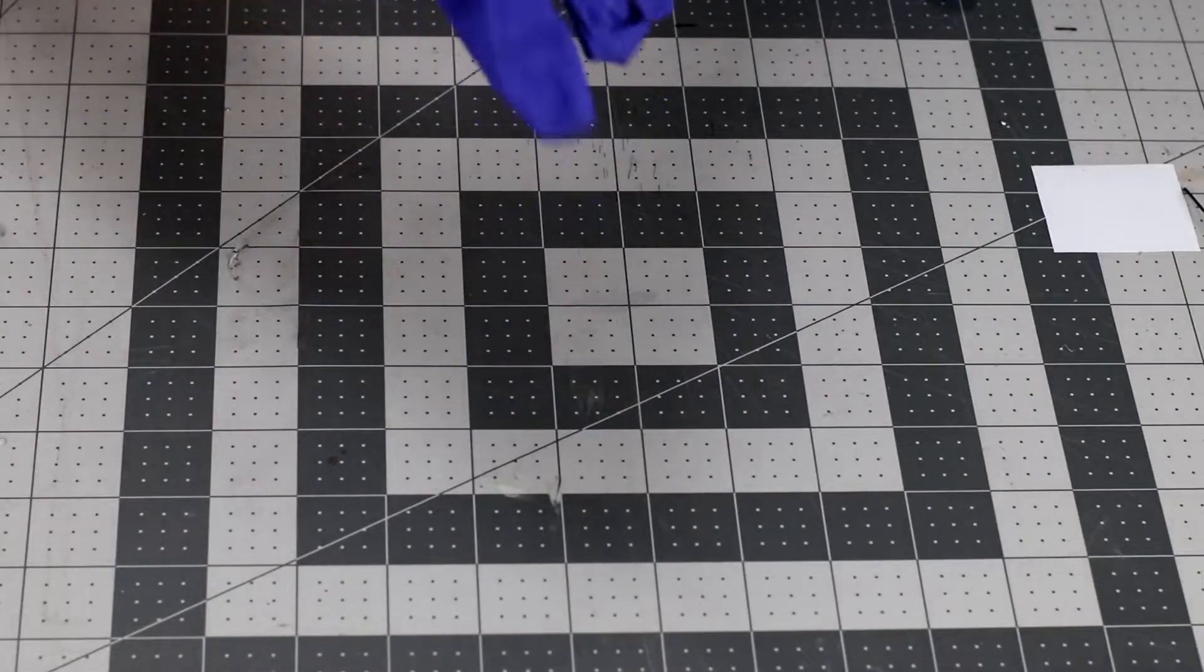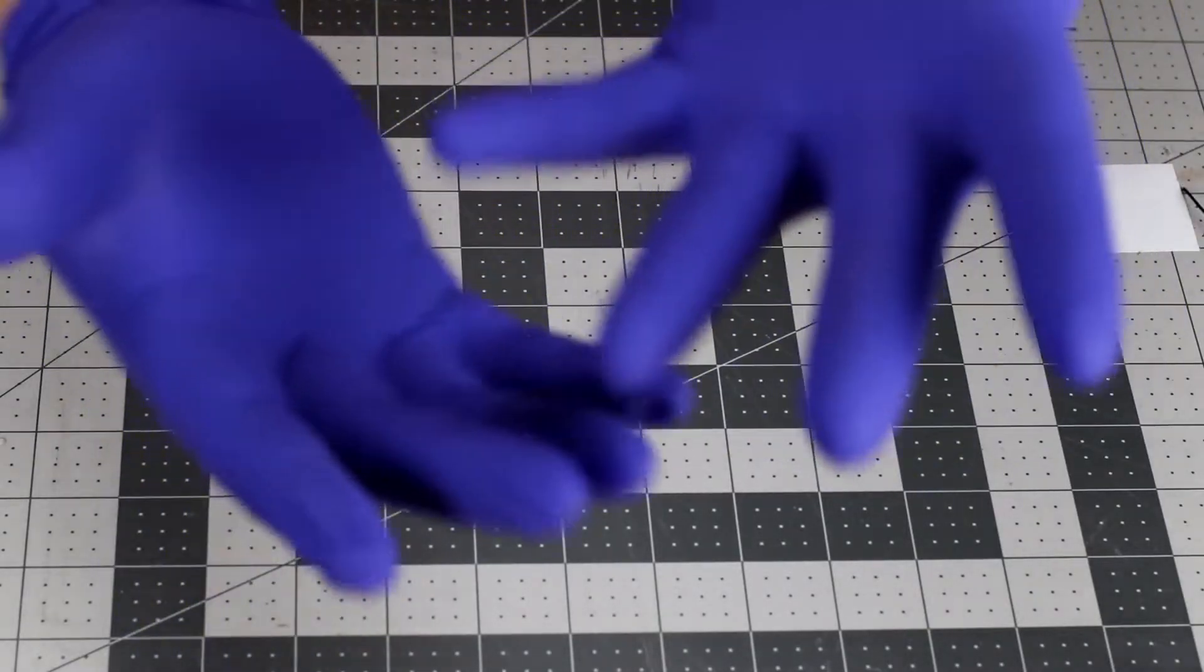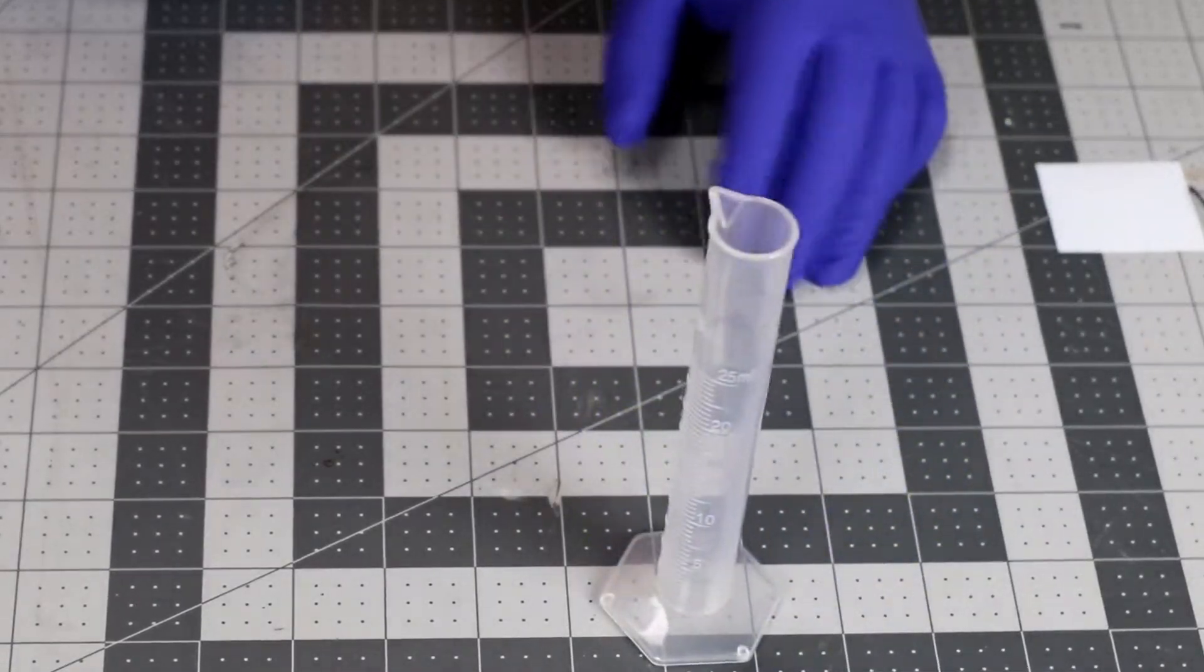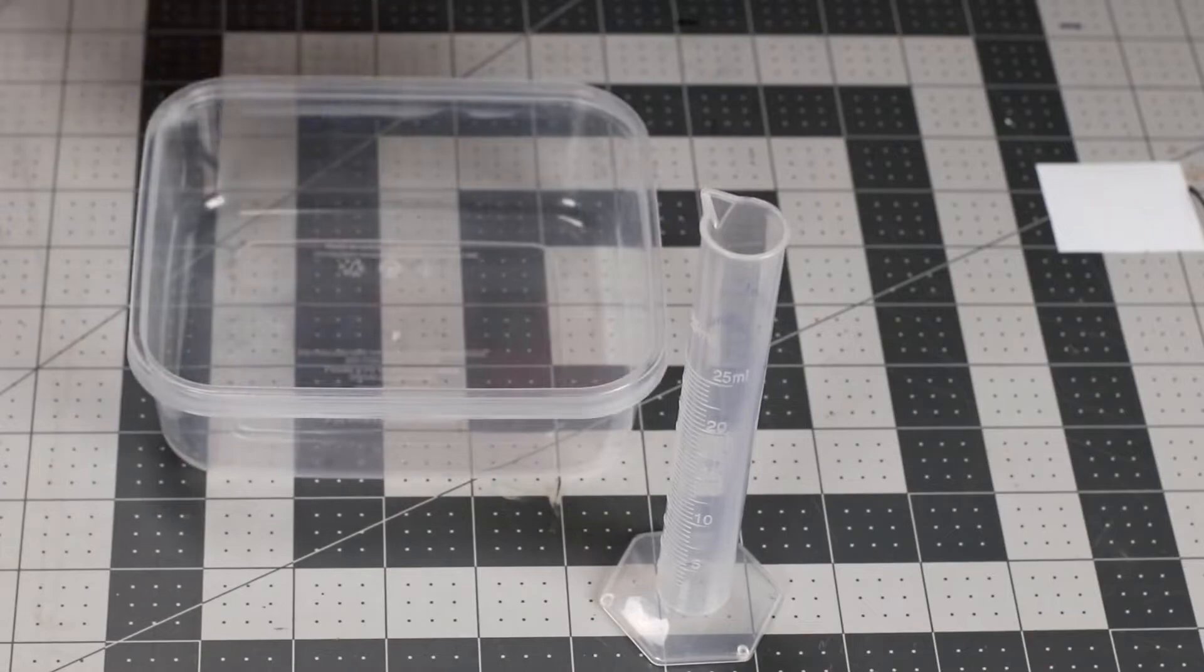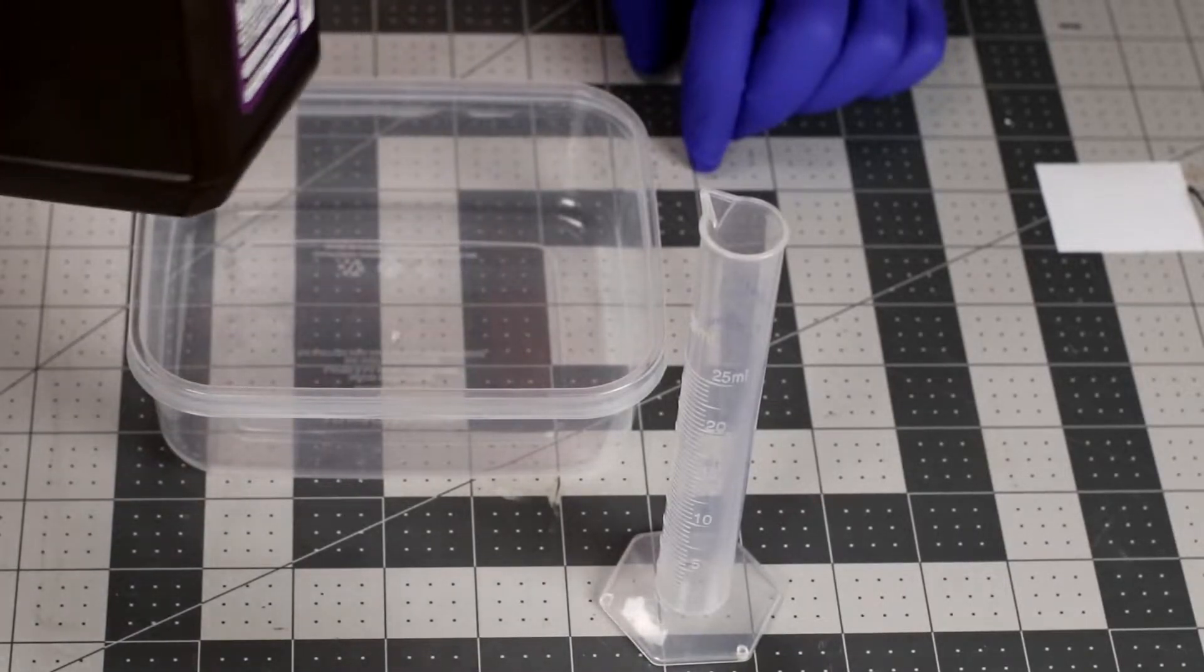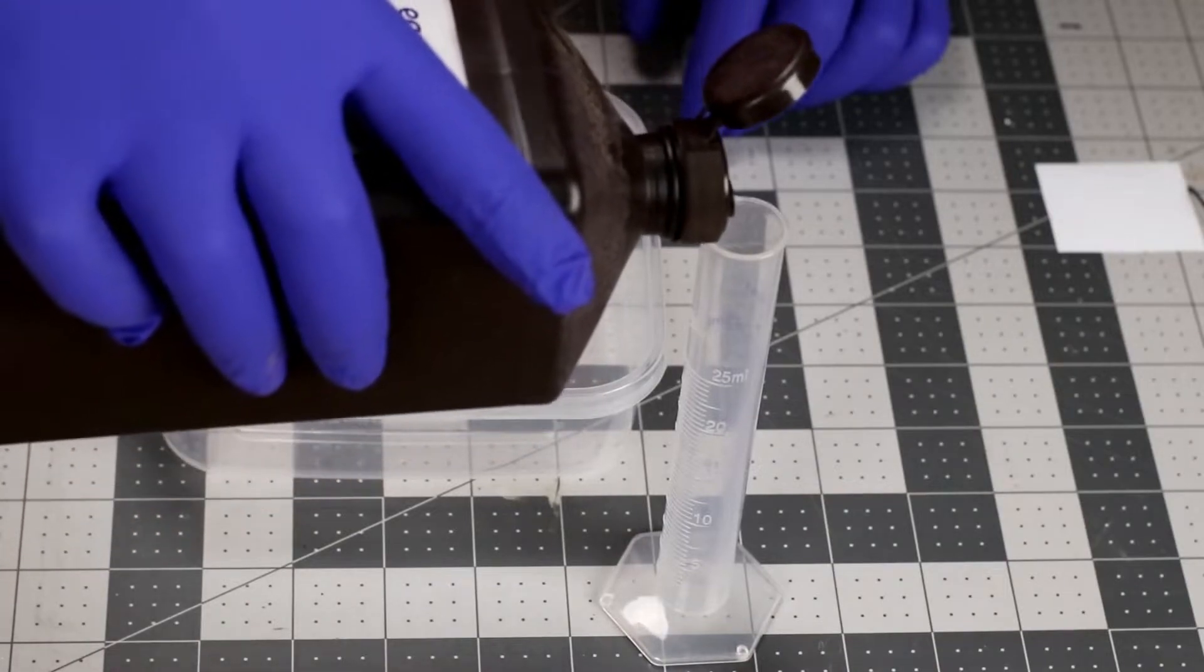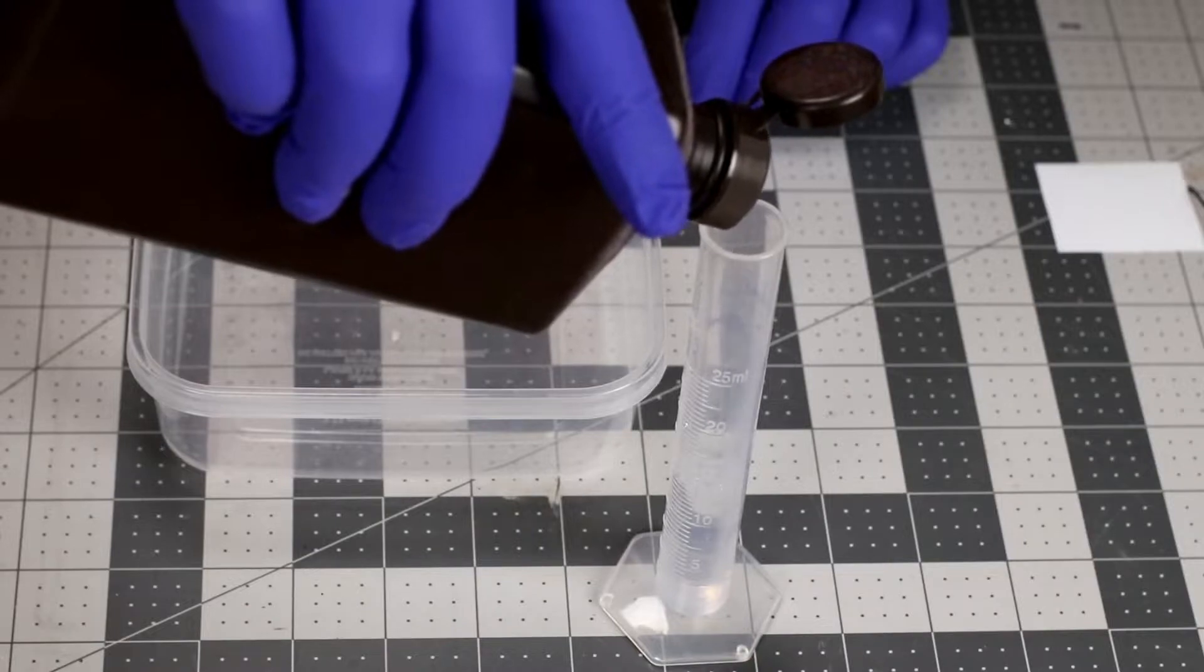Get your gloves on. Get whatever it is you're going to use to measure this out. Get your container. And I'm going to mix two parts of the peroxide to one part of the acid. I don't need a whole lot. Mix up a little bit.